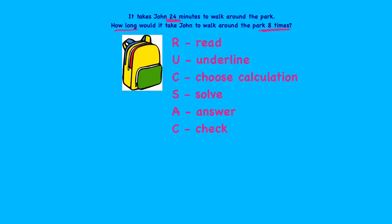Now we need to choose the calculation. One of the clues is in the question — it says 'eight times,' so I know it's going to be a multiplying question. We've got to see how long it takes John to walk around the park, and we know how long it takes him once, so how long will it take him eight times? Now we need to solve our calculation.